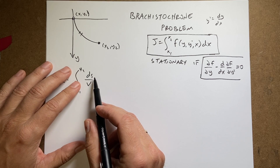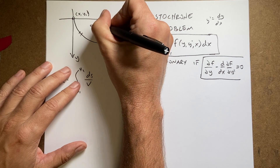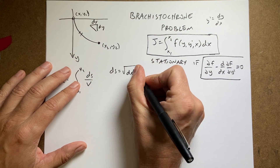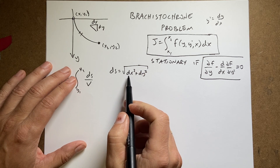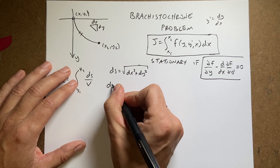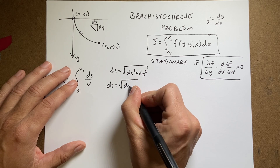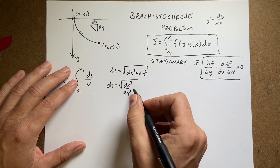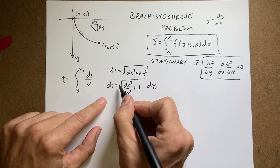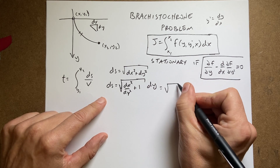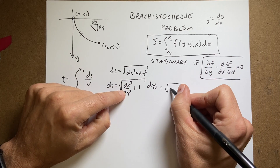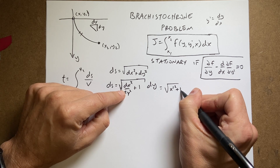The first thing I need to do is deal with ds. If I have dx and dy, then ds equals the square root of dx² + dy². I want to factor out the dy, so ds becomes the square root of (dx/dy)² + 1, times dy. That term is the derivative of x with respect to y, squared. So ds equals the square root of x′² + 1, times dy.